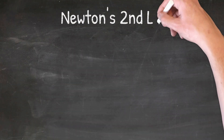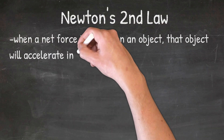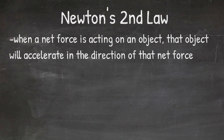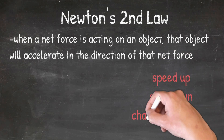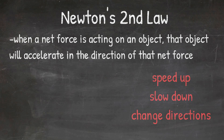Newton's second law of motion states that when a net force is acting on an object, the object will accelerate in the direction of that net force. Acceleration means to speed up, slow down, or change directions. So what Newton's second law is telling us is that if you have a net force acting on an object, then that object is either going to speed up, slow down, or change directions.